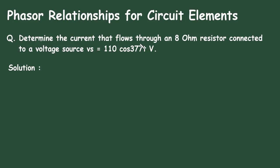Determine the current that flows through an 8 ohm resistor connected to a voltage source. Vs is equal to 110 cos 377T volts. Solution.